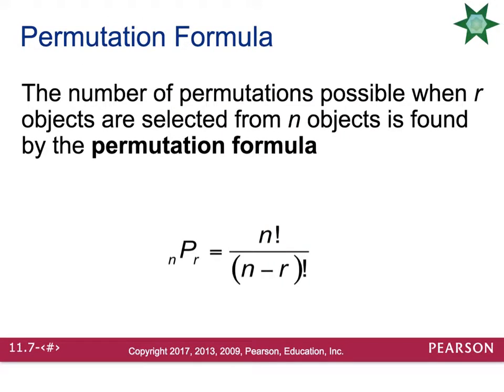So you just used what's called the permutation formula. You can do it by hand like we did, you can do it in your calculator, which is my preferred method, or you can use this formula. The number of permutations possible when r objects are selected from n objects is found by taking n factorial divided by n minus r factorial. Let me show you both methods on the next slide.